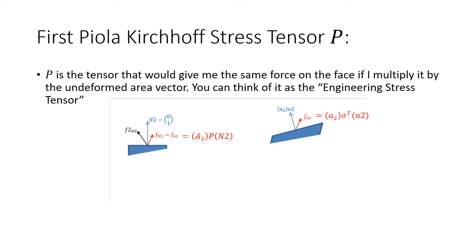The first Piola-Kirchhoff stress tensor is the linear transformation that gives the same deformed configuration force on the face when using the undeformed area vector. In the deformed configuration, we have an area of magnitude a2 and direction n2. The force is equal to the Cauchy stress tensor applied to the area vector with direction n2 and magnitude a2.